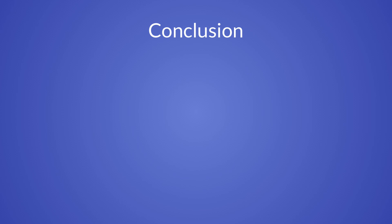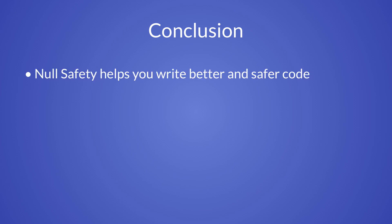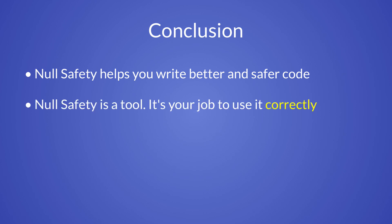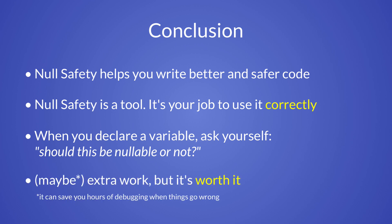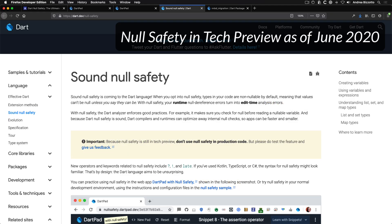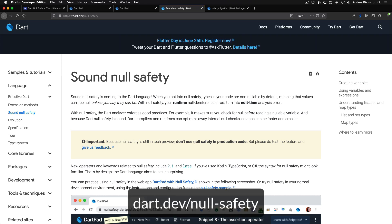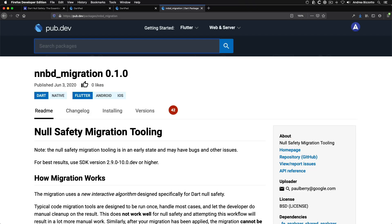We've reached the end of this tutorial. Null safety is a major change for the Dart language, introduced to help you write better and safer code. Every time you declare a variable, think about whether it should be nullable or not. As of June 2020, null safety is in tech preview and is not intended for production code yet. Full null safety as a stable feature is planned before the end of the year, and a migration tool is available to help import existing Flutter projects to null safety.